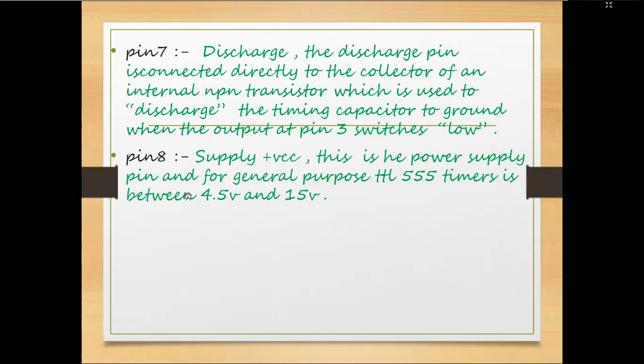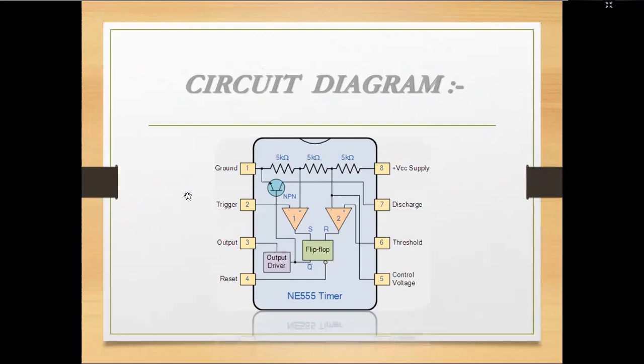Pin 6 is connected directly to the RC timing circuit. Pin 7 is the discharge pin — it is connected directly to the collector of an internal NPN transistor, which is used to discharge the timing capacitor to ground when the output at pin 3 switches low. Pin 8 is the power supply pin; for general purpose, the TTL 555 timer operates between 4.5V to 15V.